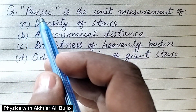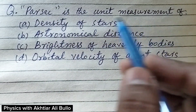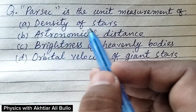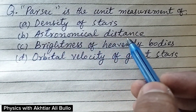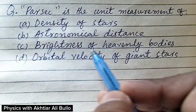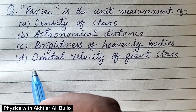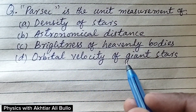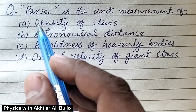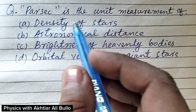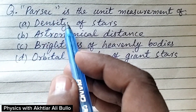The question is: Parsec is the unit measurement of — A. Density of stars, B. Astronomical distance, C. Brightness of heavenly bodies, D. Orbital velocity of joint stars. Parsec is the biggest unit of distance.